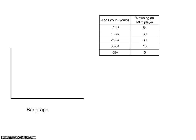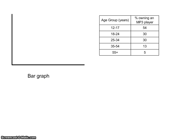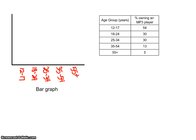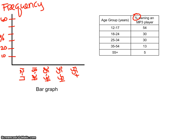A second way to display categorical data is a bar graph or bar chart. We put each category on the horizontal axis — the 12 to 17-year-old category, 18 to 24-year-old, 25 to 34, and so on. Whether the categories are colors, genders, or otherwise, the words go on the bottom. On the vertical axis, we put frequency — in this case, percent, so we need to go up to at least 54%. We have to label everything.